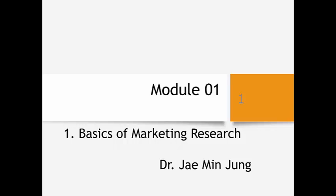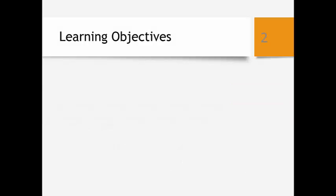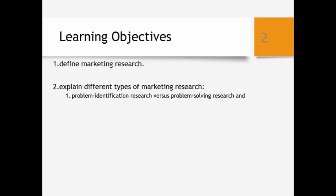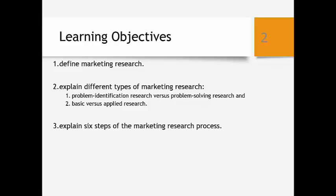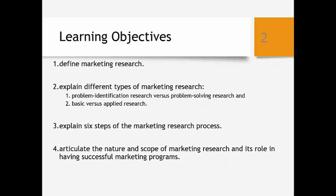Hello, I am Dr. Jamin Jung. Under Module 1, the first lesson you will learn is the basics of marketing research. Upon successful completion of this lecture, you will be able to define marketing research, explain different types of marketing research such as problem identification versus problem solving research and basic versus applied research, explain six steps of the marketing research process, and articulate the nature and scope of marketing research and its role in marketing decision making. These are some of the most fundamental introductory concepts that will help you start building your knowledge in the world of marketing research. Let's dive in.